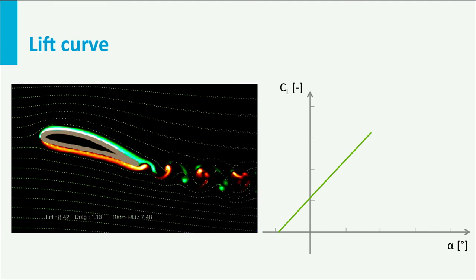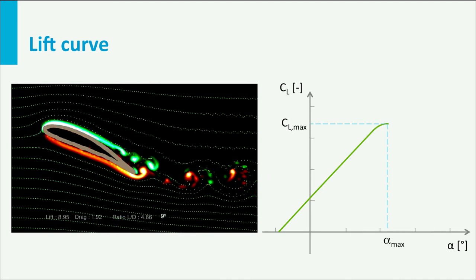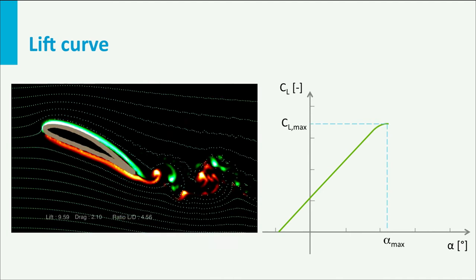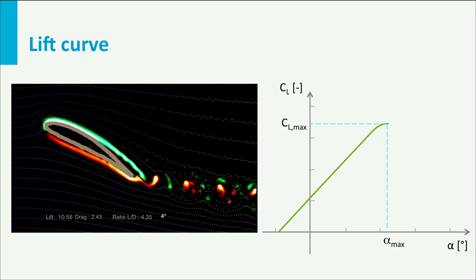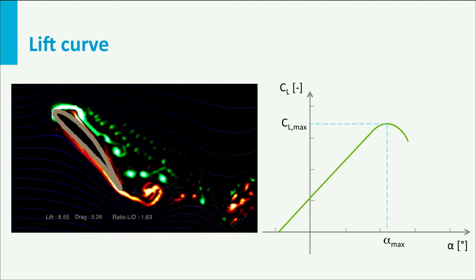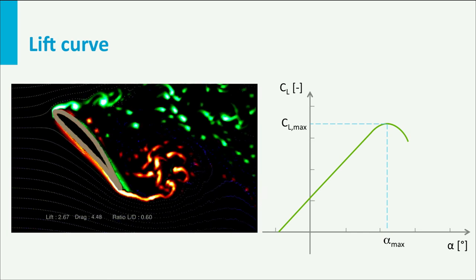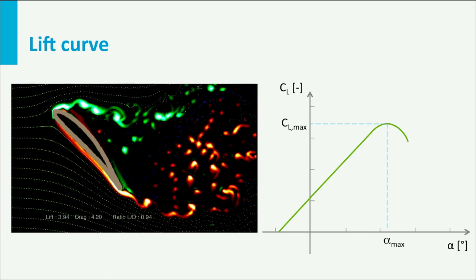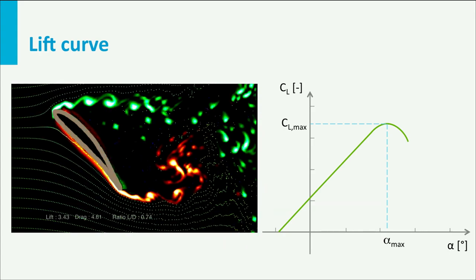Just before its maximum, the curve becomes less linear. And ultimately the maximum coefficient is obtained. A further increase in the angle of attack results in a fast decrease of the lift coefficient. This is what we call the stall of the wing. In this case the lift force drops. And look also again at the airflow around the airfoil which separates.